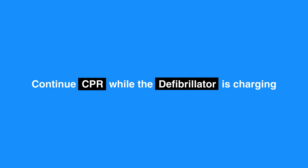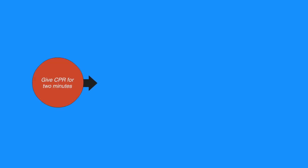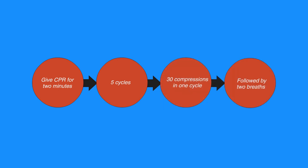Immediately after the shock, resume CPR beginning with chest compressions. Give CPR for 2 minutes — that is, approximately 5 cycles. A cycle consists of 30 compressions followed by 2 breaths for an individual without an advanced airway.